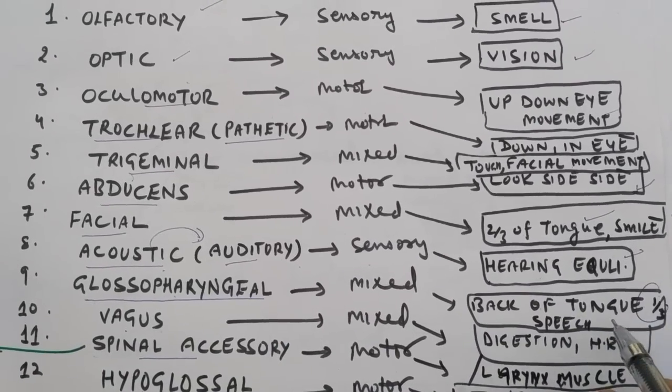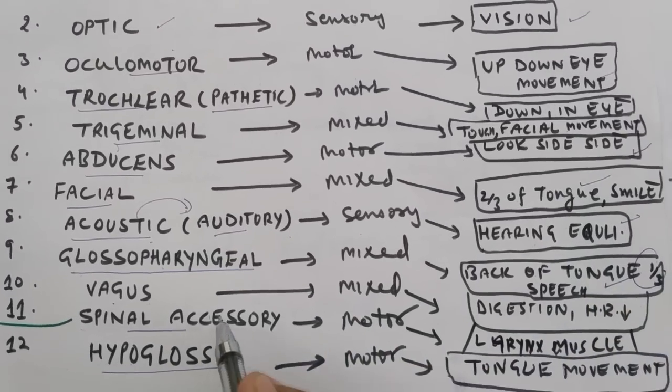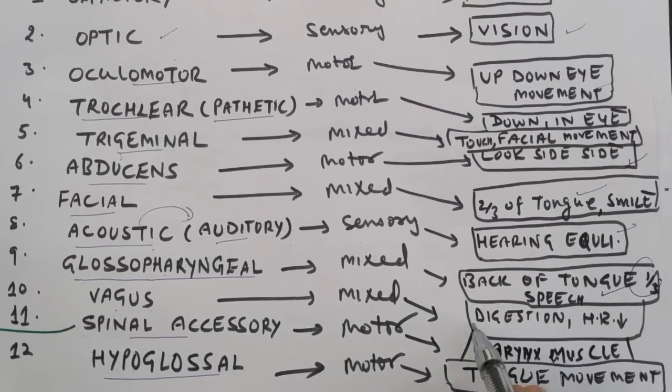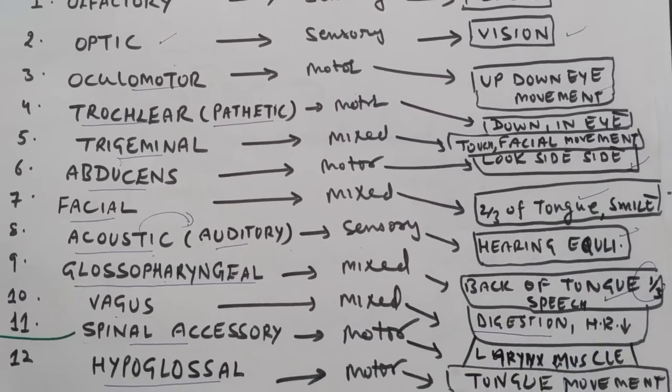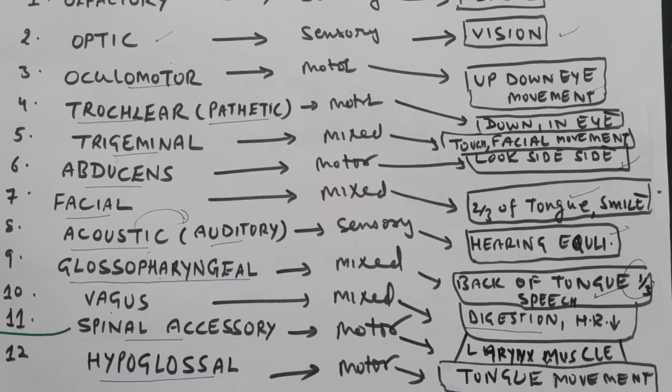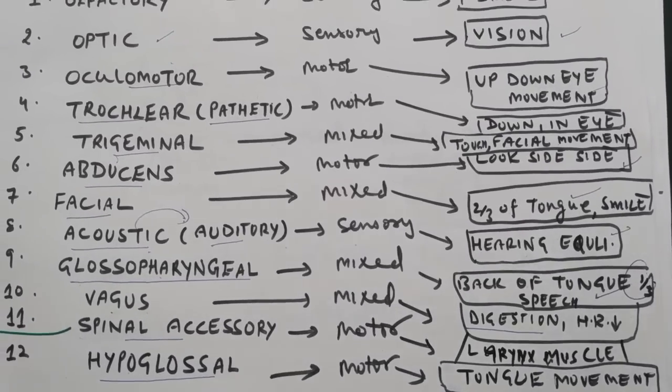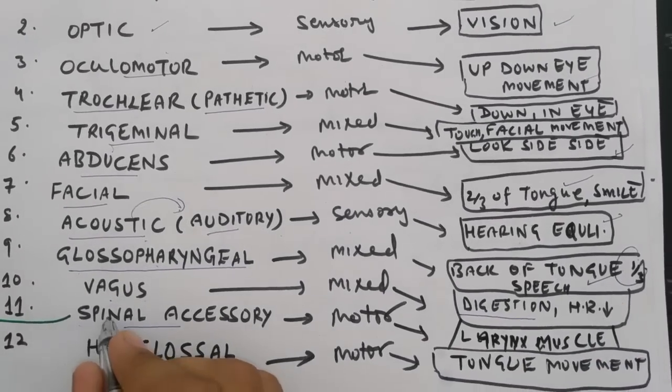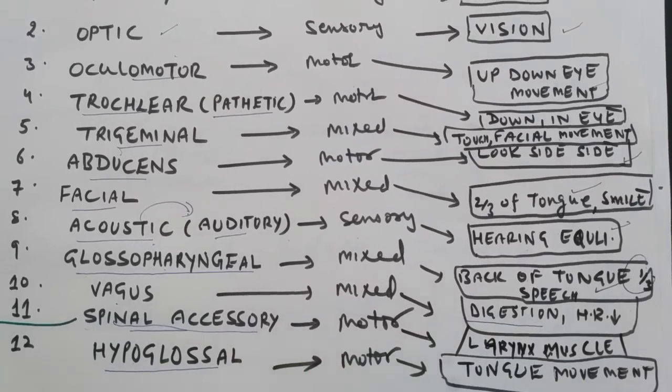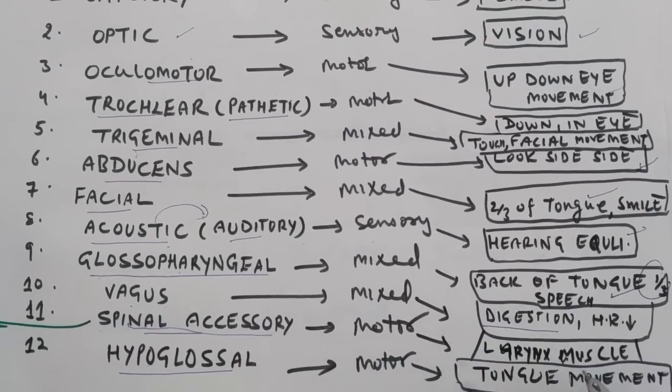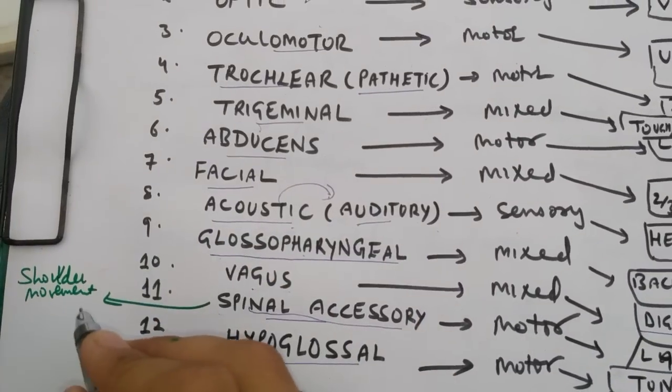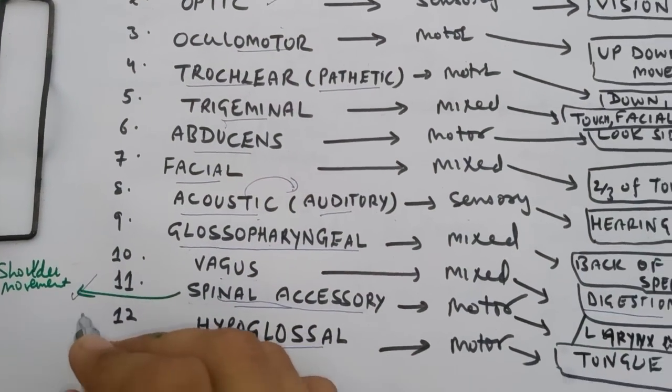Acoustic controls hearing and equilibrium, controlling our ear. Glossopharyngeal controls the back of the tongue, that is one-third of the tongue, and helps in speech. Vagus controls the visceral organs such as digestive organs, respiratory organs, and lowers the heart rate.